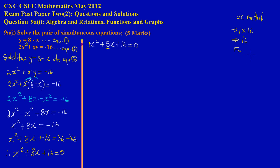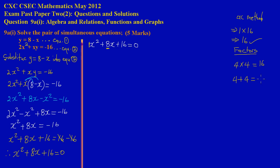The factors of 16 are 4 and 4, since 4 × 4 = 16 and 4 + 4 = 8. So the product (AC) is 16 and the sum (b) is 8. I'll now split 8x into 4x + 4x.